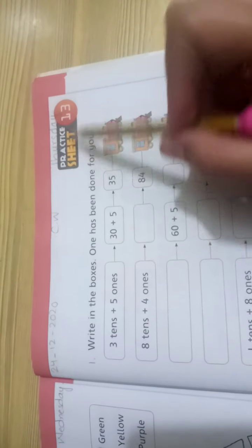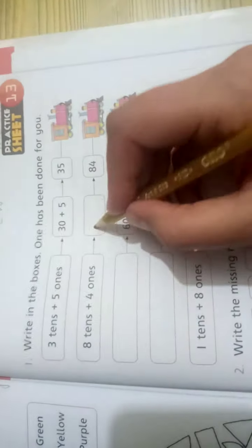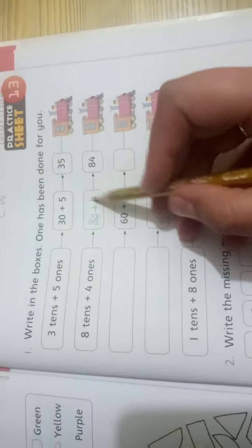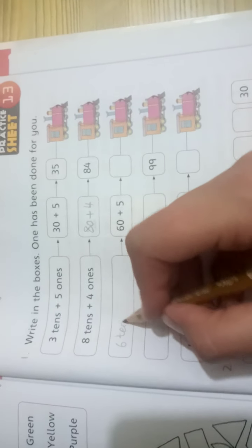Let's start this page. Practice sheet number 13: write in boxes. One has been done for you. If you already did this, page number is 35. 84: 80 plus 4, so 8 tens and 4 ones. 65: 6 tens, 60 plus 5 ones.